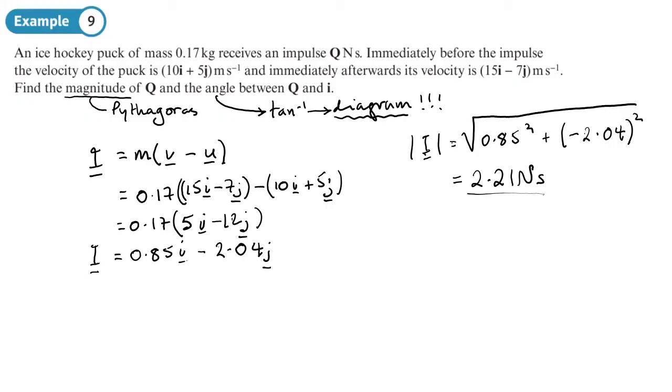Now the direction, draw a diagram. Always draw a diagram. So my impulse is 0.85 across and 2.04 down. So it's going like this. Doesn't need to be to scale. So 0.85 and this one is the negative 2.04 and we need to find the angle between that and i, which is going to be this angle here. So that will tell us which way around we do the tan inverse.